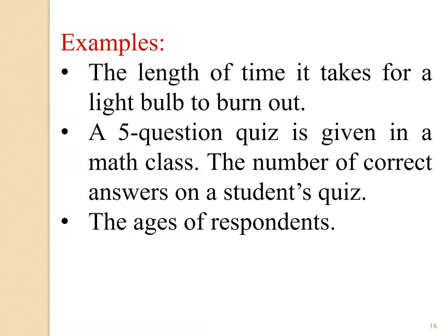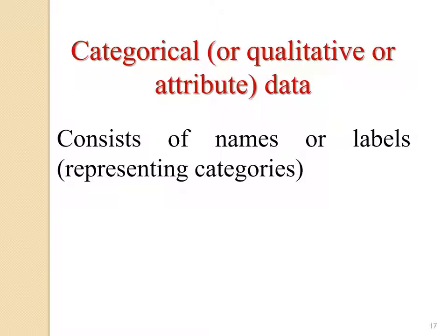For example, the length of time it takes for a light bulb to burn out — the possible answer may be 5,000 or 6,000 minutes — that is quantitative. The number of correct answers on a student quiz — possible values 0, 1, 2, 3, up to 5 — and the ages of respondents are also numerical. For qualitative data (also called attribute or categorical data), values consist of names or labels representing categories, not numerical values.